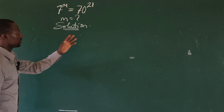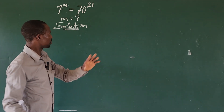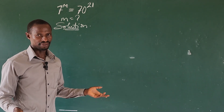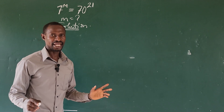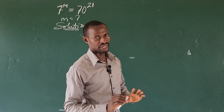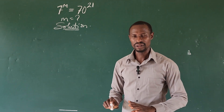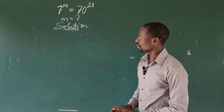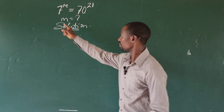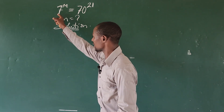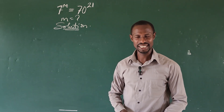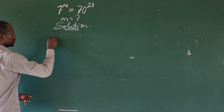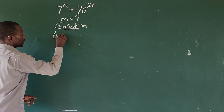The first thing we're going to do here is to take the log of both sides of the equation. Now, is it going to be log base 10, or log base what? I want to take log base 7, because of the base 7 we have in the equation. So let's take log base 7.